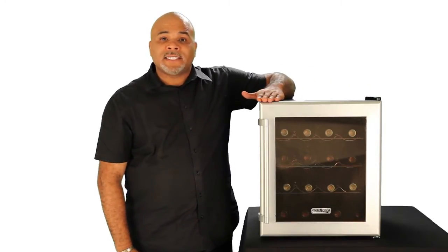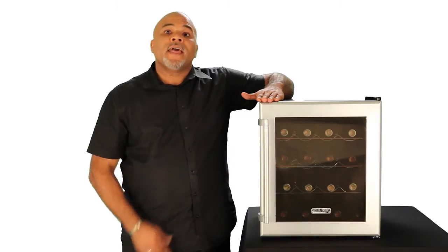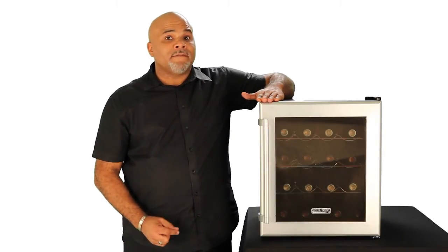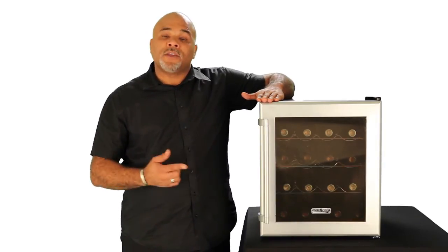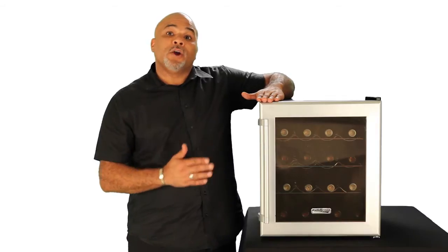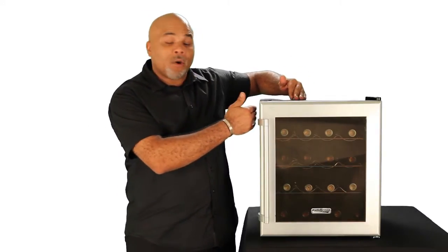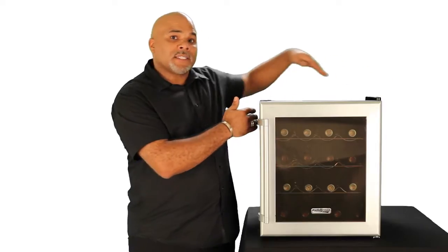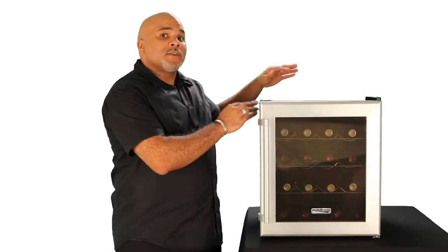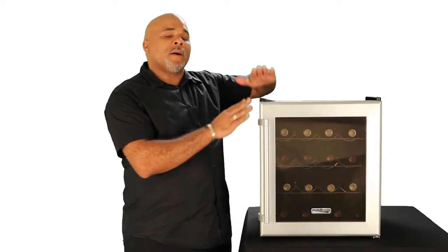This is a free-standing unit like most thermoelectric units are. Thus, you do need to make sure you leave plenty of ventilation space so the unit can ventilate properly. On this particular unit you want to leave two to three inches on each side as well as three to four inches on the rear so that it'll ventilate properly and help it last longer.